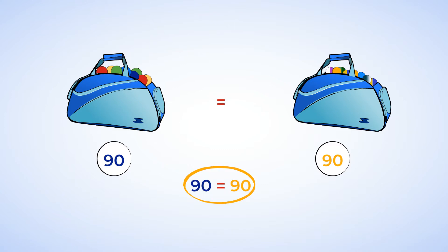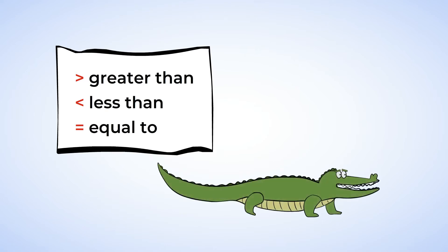Now let's sum up what we've learned today. We learned about three symbols that can tell us whether a number is bigger, smaller, or equal to another number. And those symbols are greater than, less than, and equal to. The greater than and less than symbols look like an alligator mouth. And remember, the mouth always faces the bigger number.